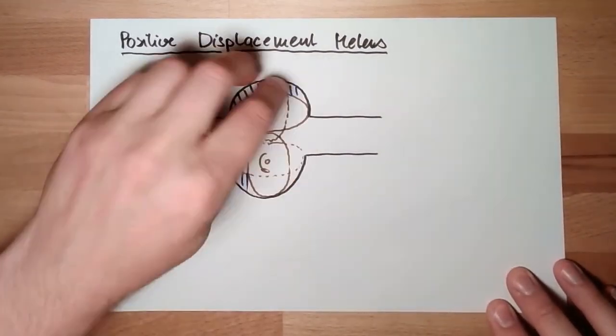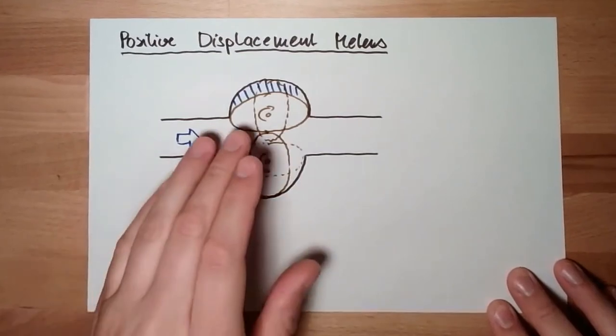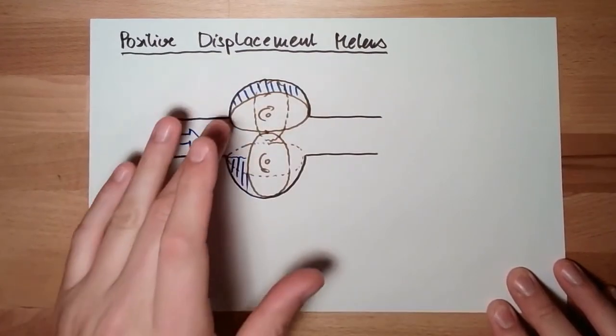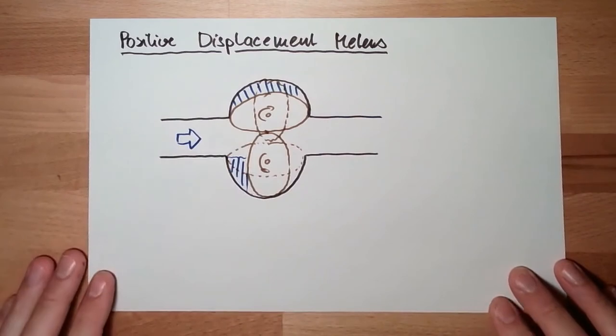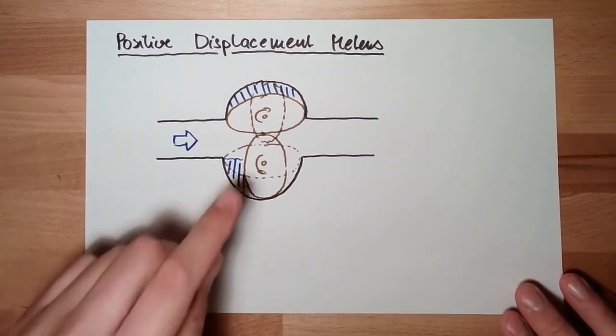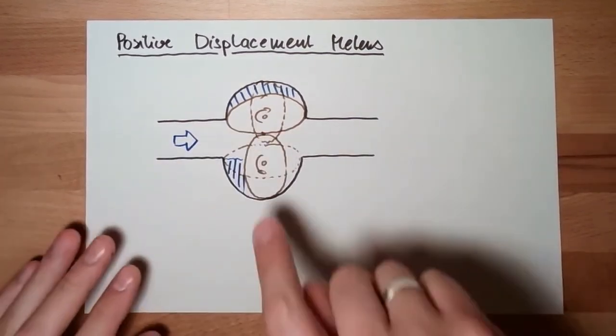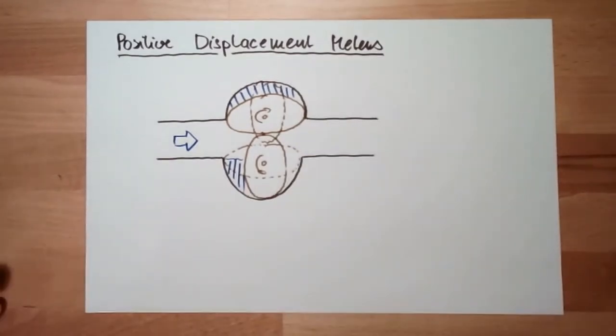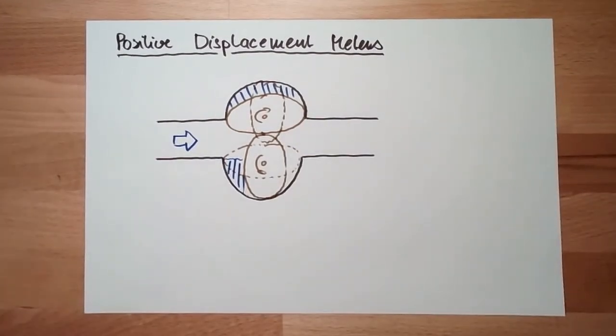And then we know, since this is a defined volume, a positive displacement, defined volume, I know how much flow. So just have to see how many rotations per minute this thing is doing. And I know how much flow this thing is doing.